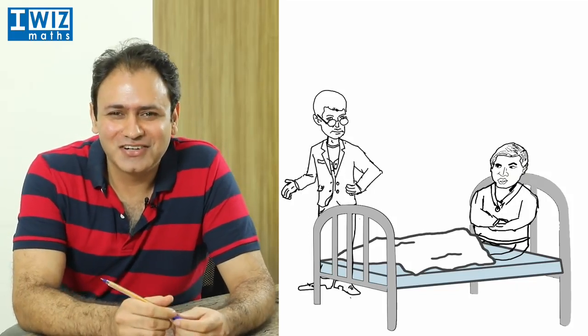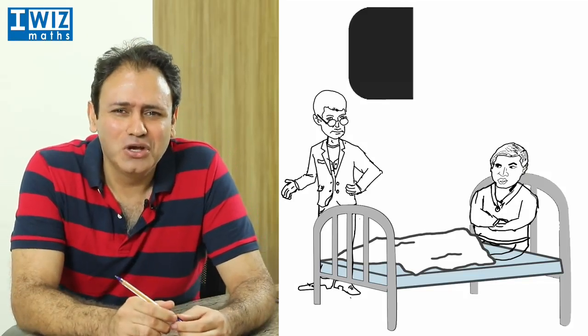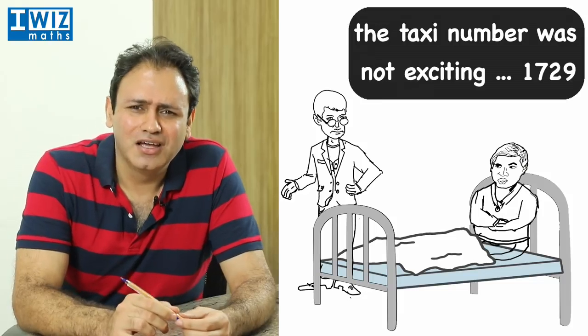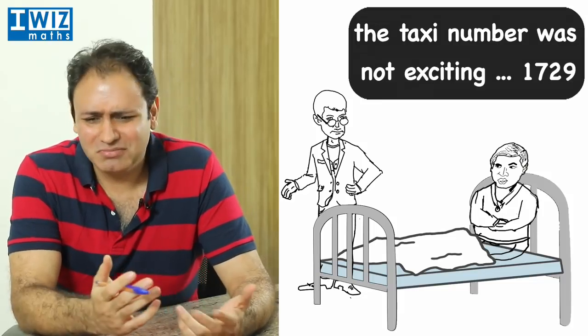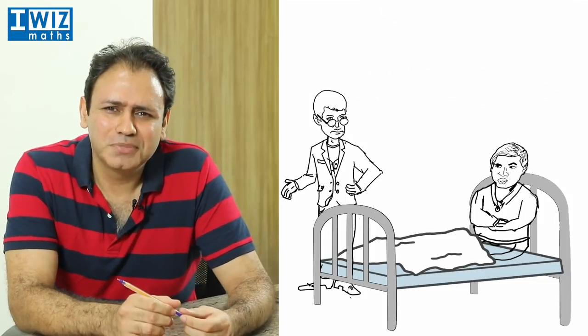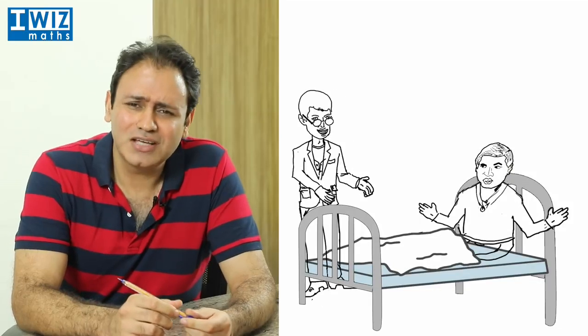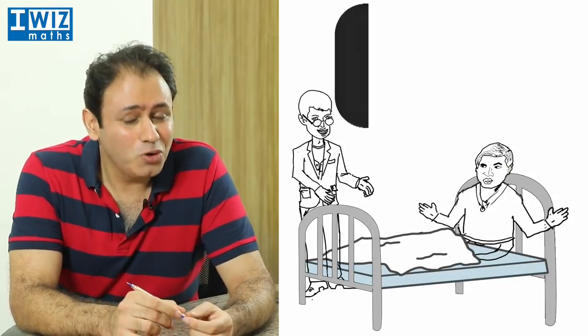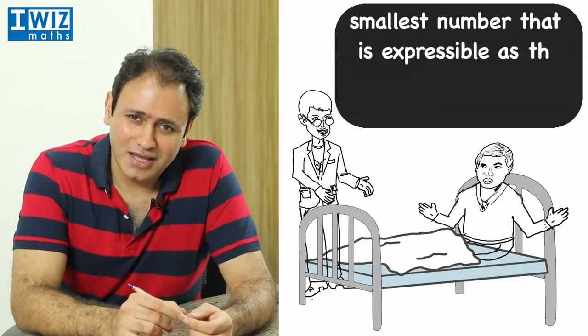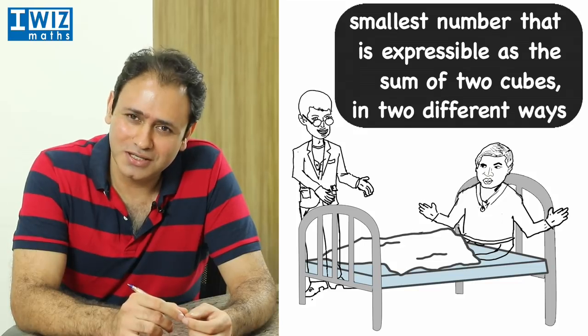So G.H. Hardy tells Ramanujan that the taxi number that he came in was not a very exciting number. It was 1729, and he says this wasn't very exciting. But Srinivas Ramanujan immediately gets back to him and says, no, I mean, it's actually a really interesting number. It's the smallest number that is expressible as the sum of two cubes in two different ways.